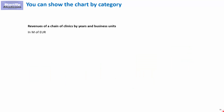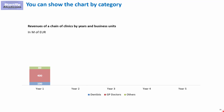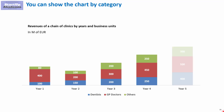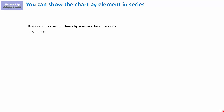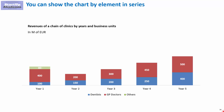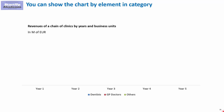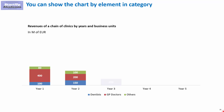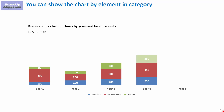We can show the same data by years, or we can show specific elements in the data series year by year, so you can see how they appear one by one. The same effect can also be done per year, showing all three business units one by one — first dentists for year one, then GP doctors for year one, then others for year one — and then the same for years two, three, four, and five.